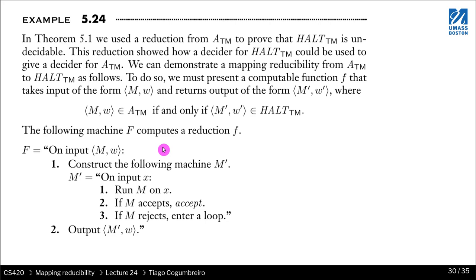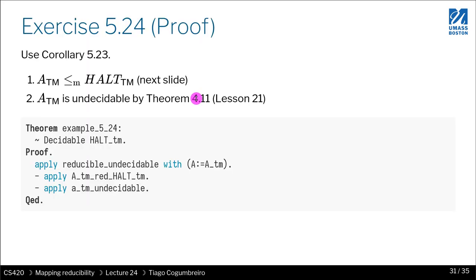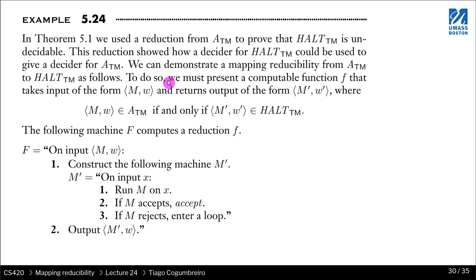The difficulty is really getting the mapping function right — that's actually the creative part of the proof process. Once you get the mapping function, the rest will follow from the theorem, specifically corollary 5.23. So we proved in corollary 5.23 that if a language A is undecidable and A maps to B, then B is undecidable.